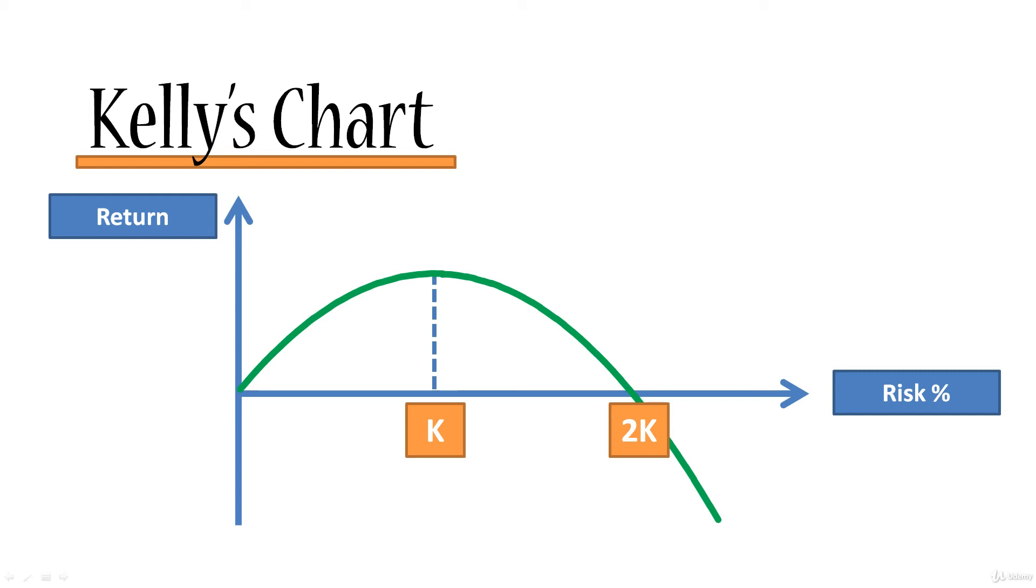Regardless of how you change the rules for the coin toss game or what kind of trading strategy you use, your optimal outcome will always be if you, in the long run, bet exactly K percentage of your account balance. And your breakeven point will always be double that, always at 2K.